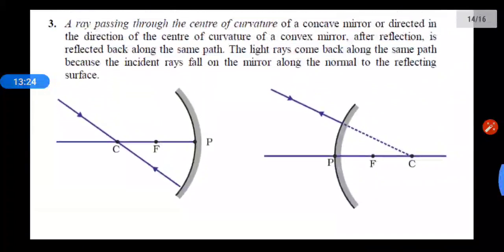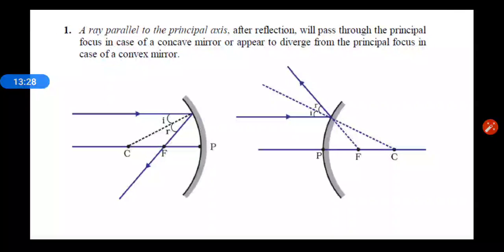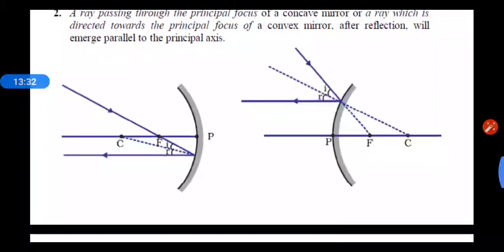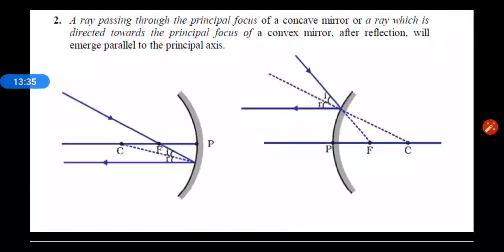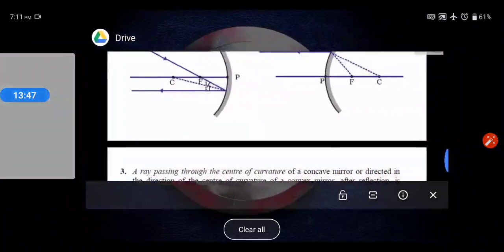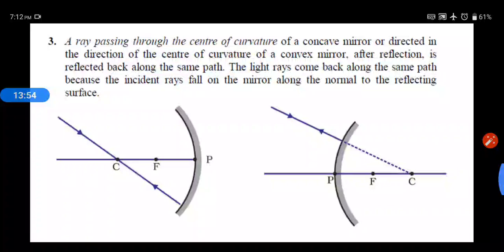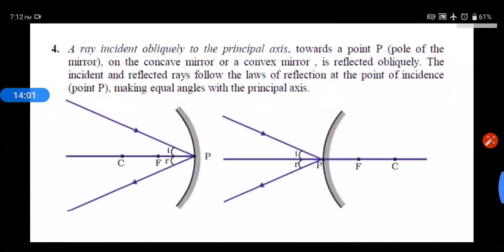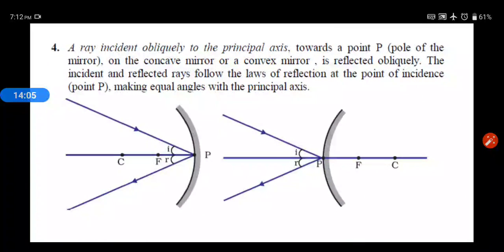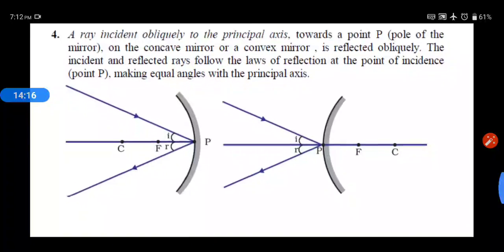So these are the four rules. Rule 1: a ray parallel to the principal axis will pass through the principal focus after reflection. Rule 2: a ray passing through the principal focus will go parallel to the principal axis after reflection. Rule 3: a ray passing through the center of curvature will retrace its path. Rule 4: a ray incident obliquely to the principal axis will reflect making the same angle with the principal axis. These were the topics covered in this video. Thank you.